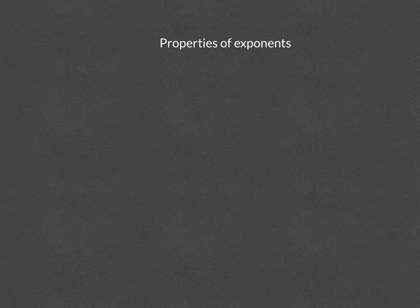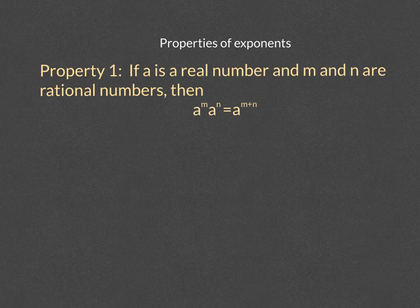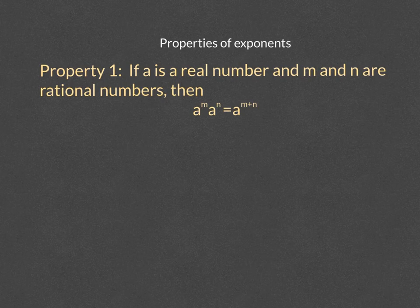So with that in mind, let's go over the basic properties of exponents. The first property says if a, which is our base, is a real number and m and n, which are our exponents, are rational numbers, then a to the m times a to the n is equal to a to the m plus n. What that means is that we add the powers.